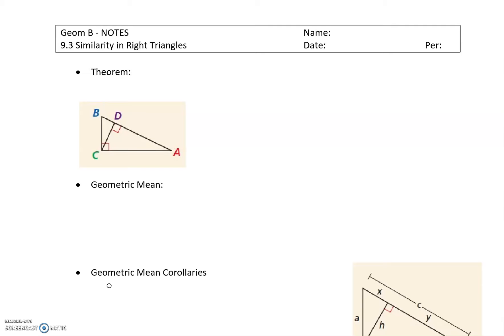Anytime you have a right triangle, remember the longest side is what we call the hypotenuse. So if you look at this entire triangle ABC as one single right triangle, the hypotenuse is that longest side AB. And then we can create an altitude, which is basically the height, from any vertex of your triangle to one of the sides, as long as it makes a right angle. Here, we've strategically created an altitude from C to D, so you can see how it makes a right angle. This is an altitude of triangle ABC.